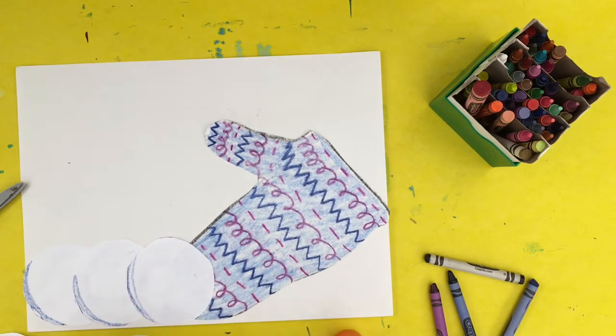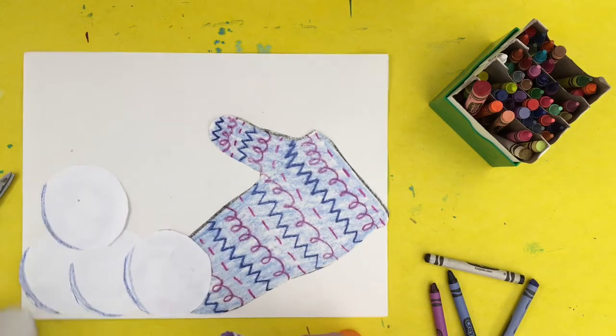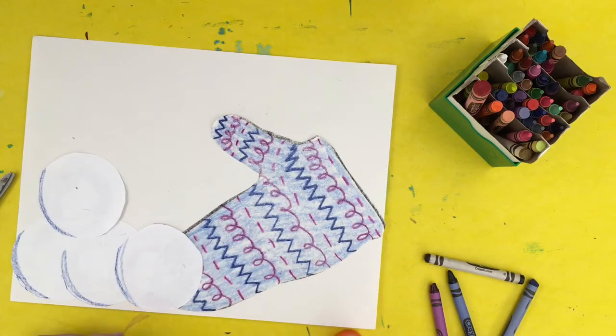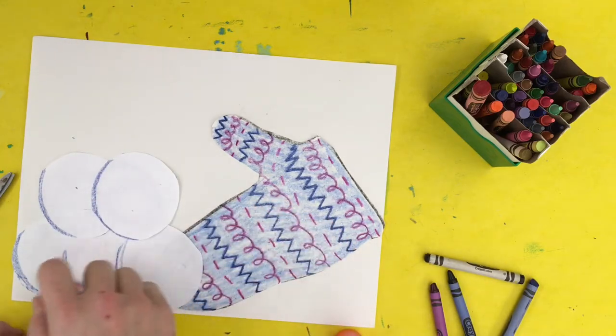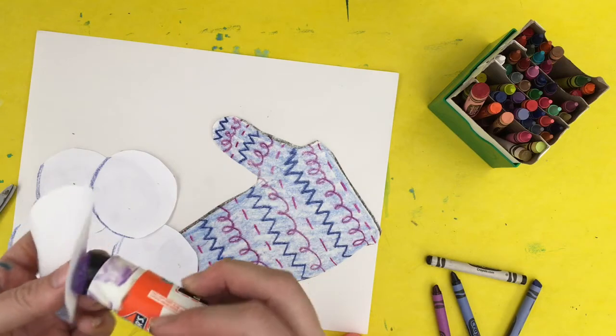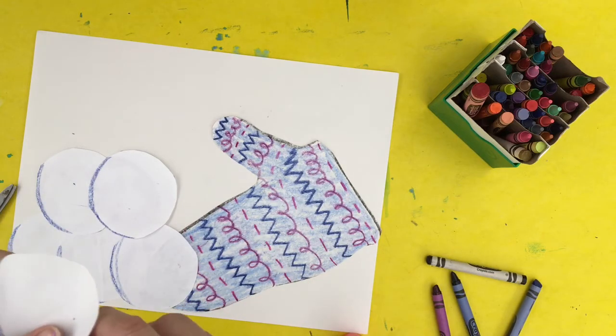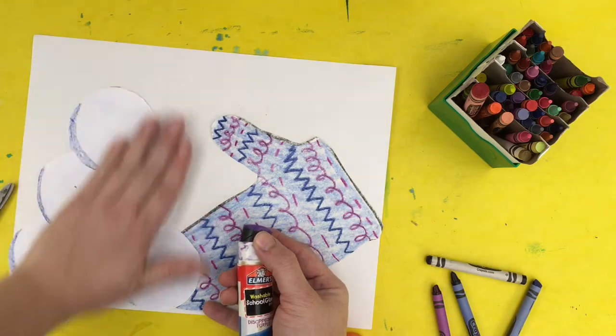And then two in the middle. Rub a dub dub. And then squiggle. And then the last one on the top for my pile of snowballs. Make sure all of my blue shadows are in the same spot, off to the side towards the bottom. Rub a dub dub.